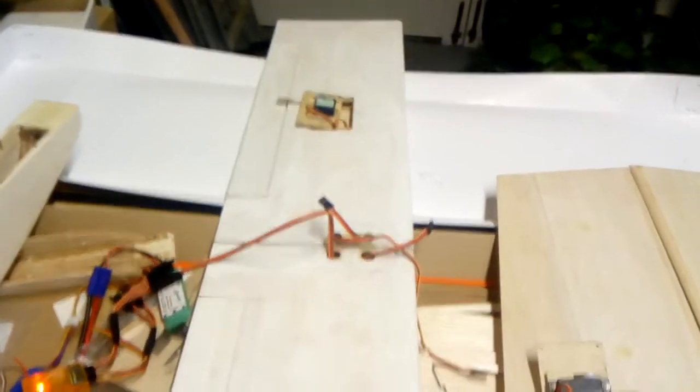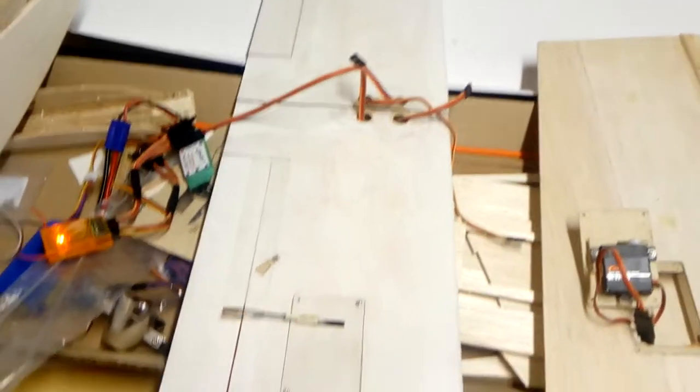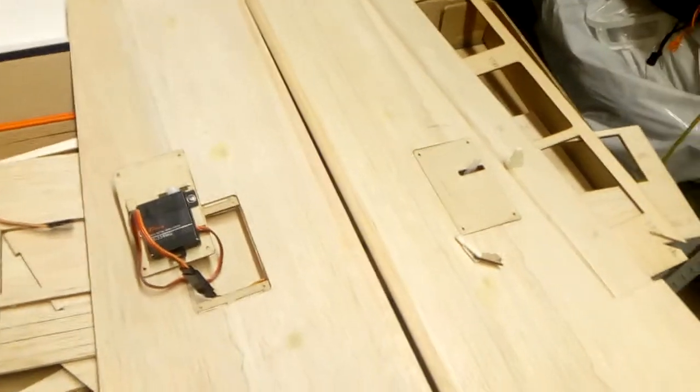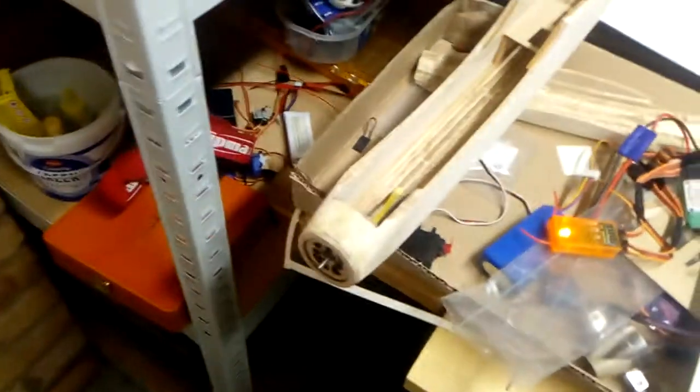But I'll let you know how we get on. But the inner wing's essentially finished. That just needs to be painted and covered and what have you. And I'm now working on the outer wing panels. The fuselage pod, that's what it is. I've got the motor installed now, so that's okay.